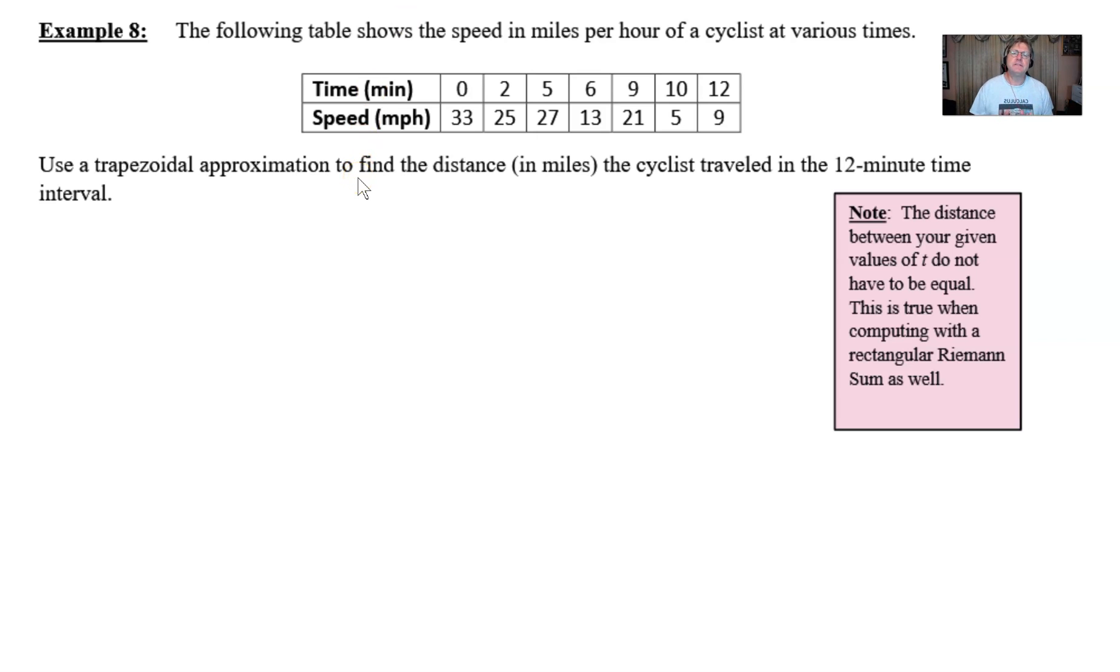Well, even though we are only able to find a few discrete speeds at some various instances, we could still use some kind of approximation technique and find the total distance in miles that the cyclist travels during this 12 minute time interval. And we're going to use the trapezoidal approximation.